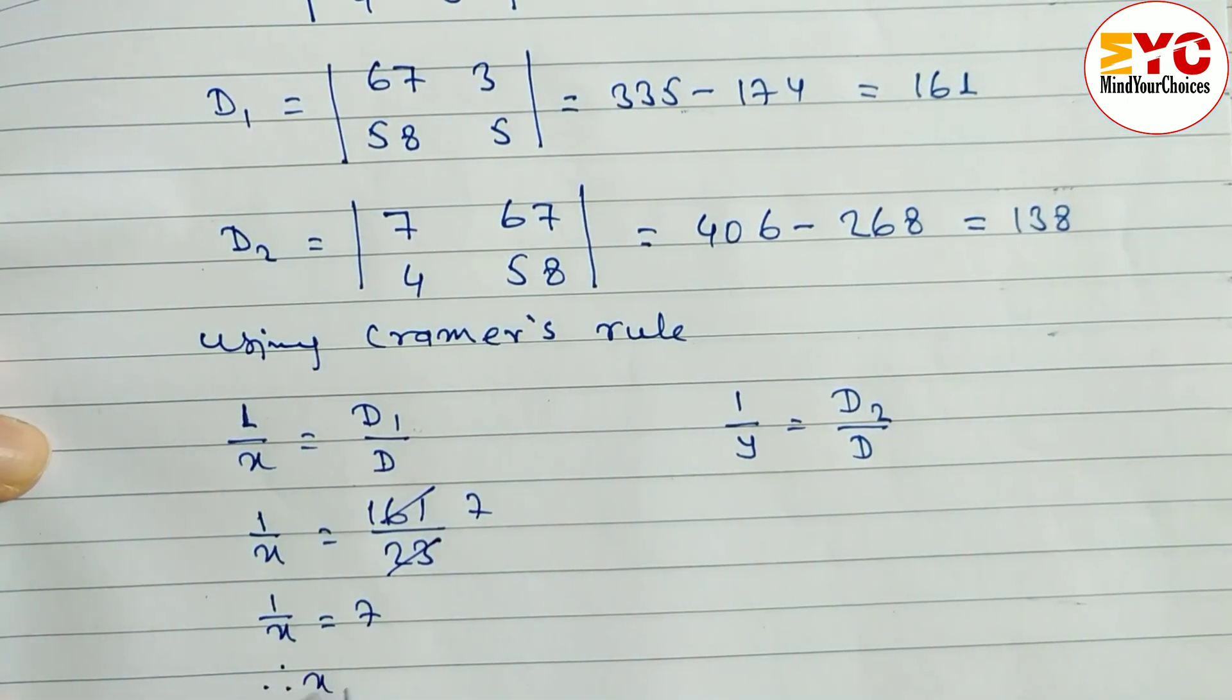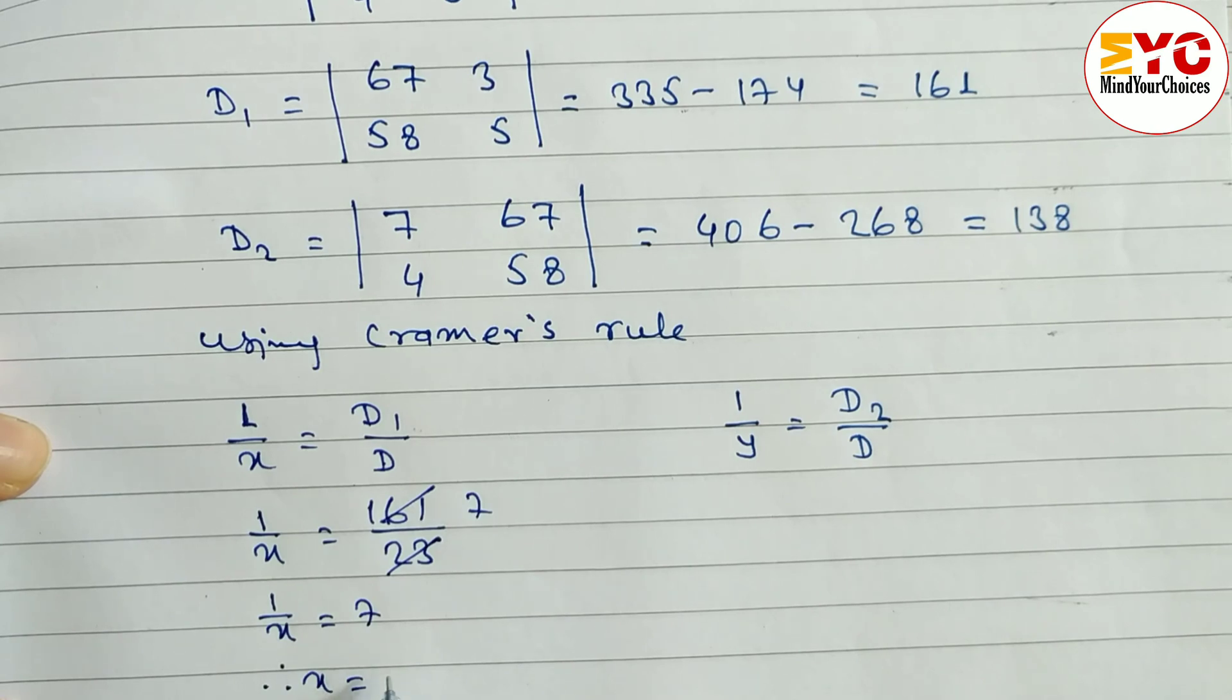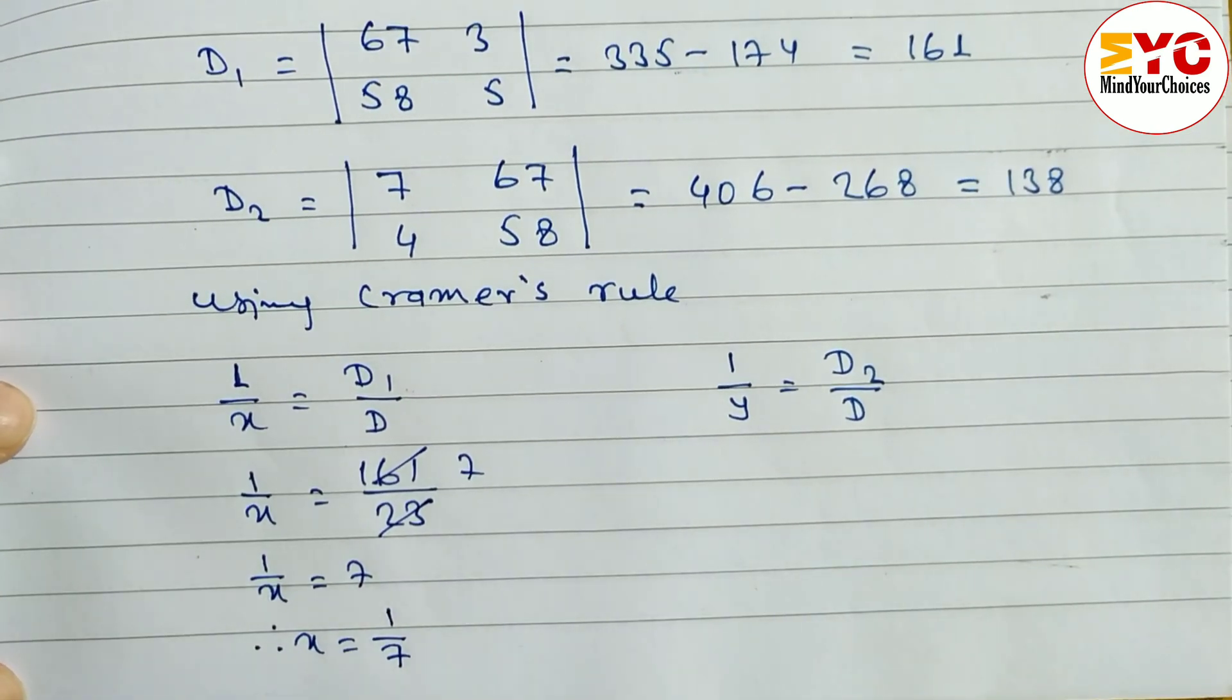Let's cross multiply. Therefore x is equal to. We have 1 by 7 is the answer. Okay. So x is equal to 1 by 7 we got.